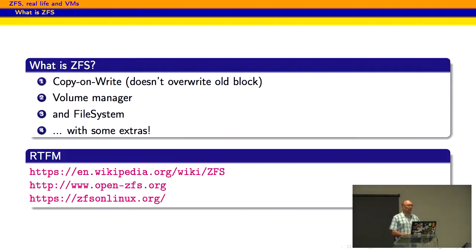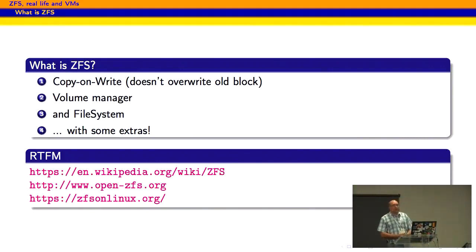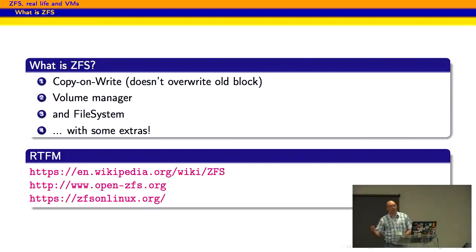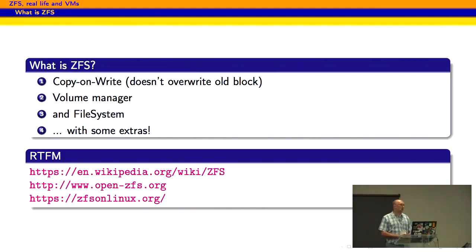So what is ZFS? The quick and short answer is it's a copy-on-write volume manager and file system with lots of extra things on it. You can look at the Wikipedia article on ZFS if you want to read up on the history. You can go to OpenZFS where most of the development in the open source world for both FreeBSD as well as Linux happens. If you want to run it, you want to run it with ZFS on Linux — that's where ZFS actually becomes part of the kernel and not inside FUSE.